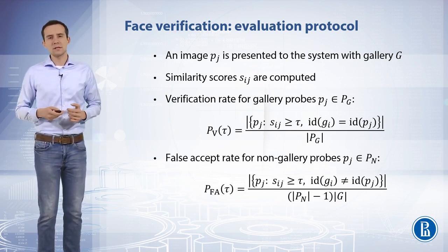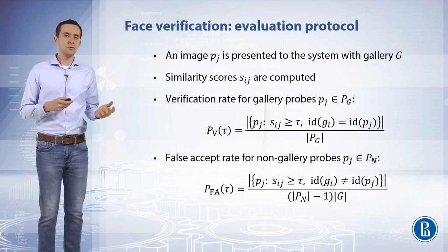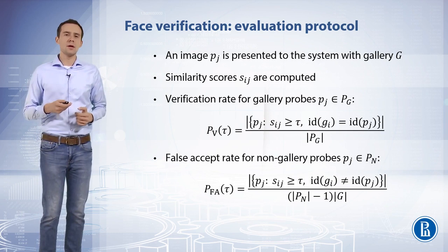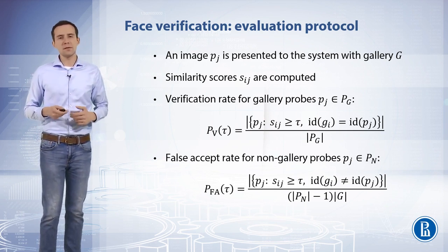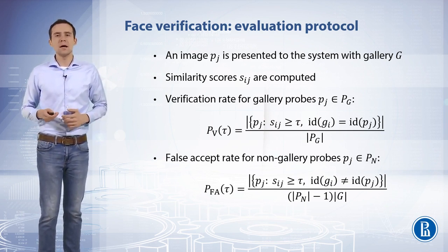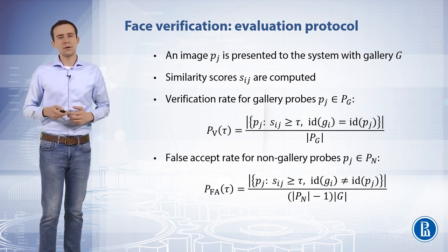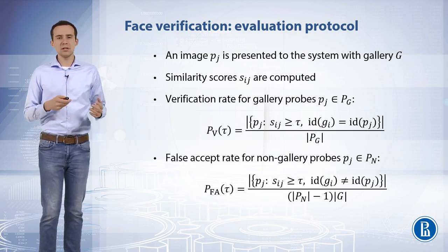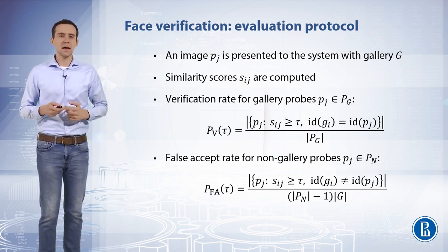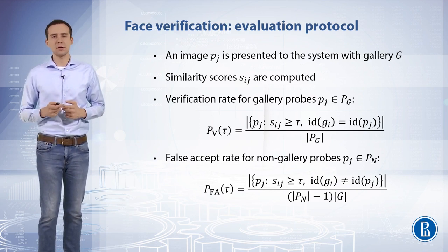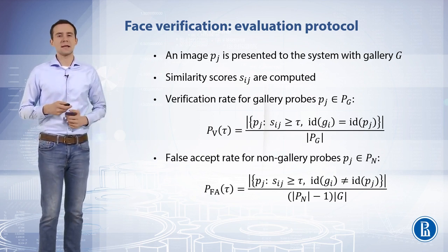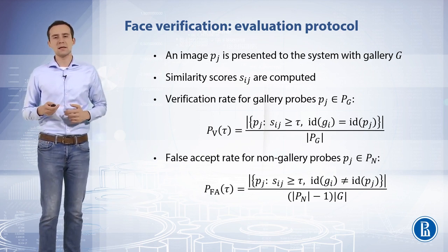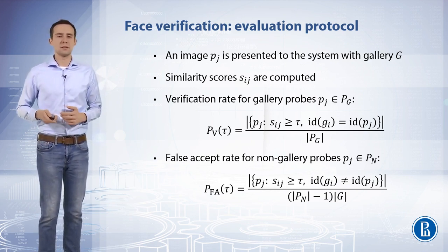To compute system performance, one needs two sets of images: the set P_G of people whose images are presented in the gallery, and the set P_N of people who are not presented in the gallery. The verification rate is the ratio of persons from P_G accepted at a given operational threshold, while the false accept rate is the ratio of people from P_N accepted at that same operational threshold tau.